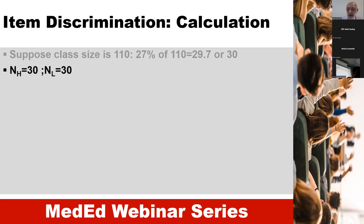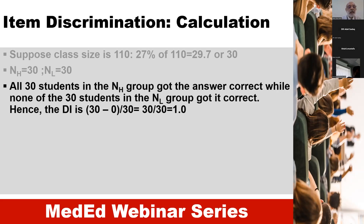There are 30 students in the higher group and 30 students in the lower group. If all 30 students in the higher group got the answer correct while none of the 30 students in the lower group got it correct, the discrimination index would be 1 — that is, 30 minus 0 over 30 equals 1. That means very high discrimination.